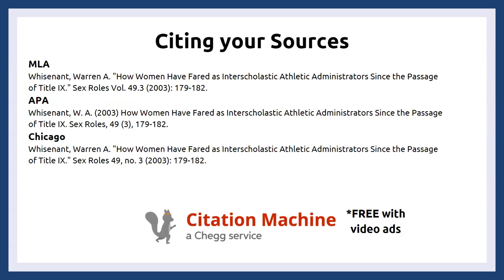There are different types of citations, and different subject disciplines call for different citation information written in very specific orders. Three of the most common styles are MLA, APA, and Chicago. For example, citing a paper called 'How Women Have Fared as Interscholastic Athletic Administrators Since the Passage of Title IX' — you'll notice some styles use quotation marks and some don't, so there are slight differences in how they are written.